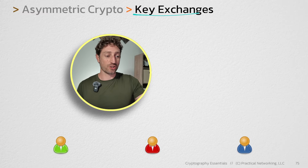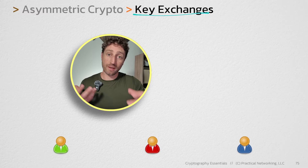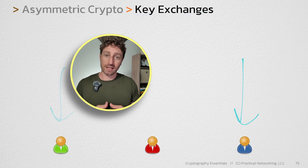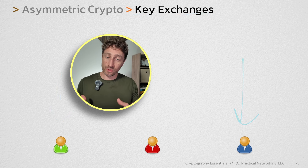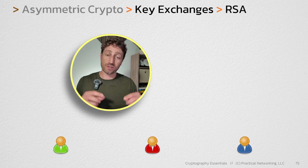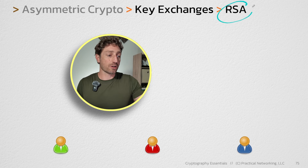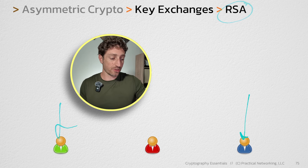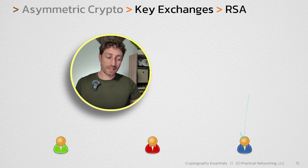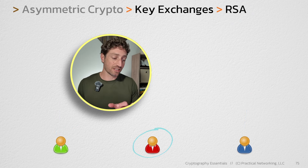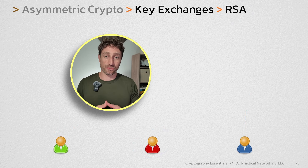Remember, the goal of key exchanges is to establish a mutual shared secret on either side of the wire. And there's two ways to do it. One of those ways is RSA. We're going to show you how we can use RSA for this green and blue user to establish a mutual shared secret, even though this red user is listening in on anything sent between these two users.